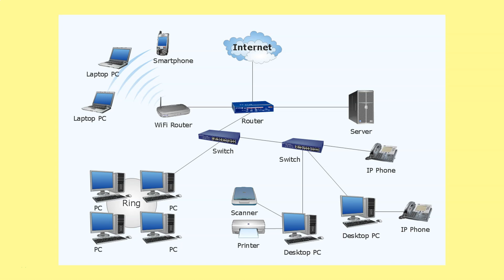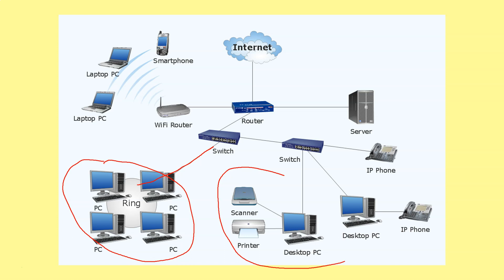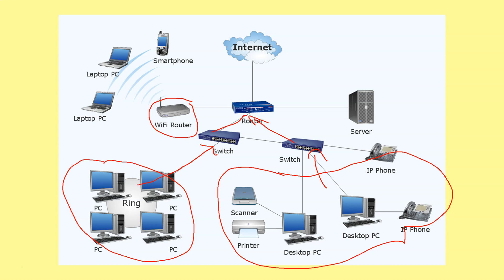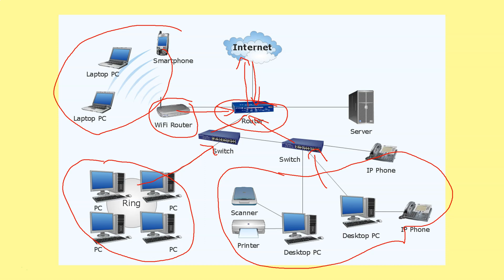Let's have a look at some of this hardware all being used together. We've got different groups of computers — one room of computers connects together with a switch, another room of devices connects together with another switch, and both connect to the router. We also have a wireless access point connecting devices wirelessly to the same network. The router then connects the local area network to the wide area network of the internet. The wireless access point connects wireless devices on the LAN, the switches connect cabled computers via ethernet, and the router connects the LAN to the WAN.